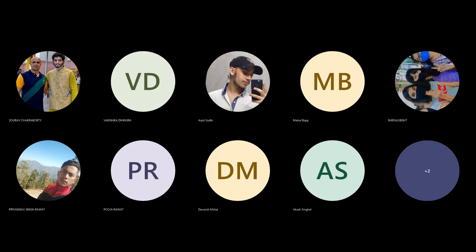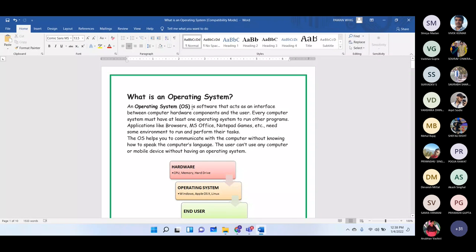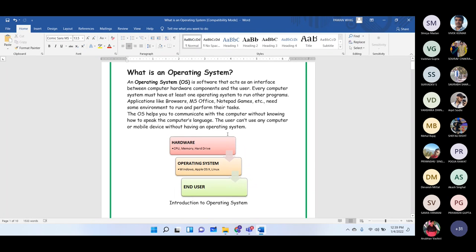What is an operating system? An operating system is a software that acts as an interface between computer hardware components and the user. This is clear from a diagram showing end users on one side, hardware like the CPU on the other, and the operating system linking them. Operating systems come in various versions like Windows, Apple, and Linux.